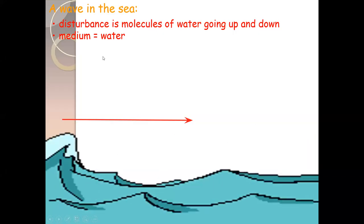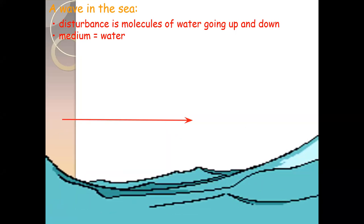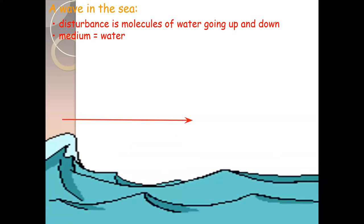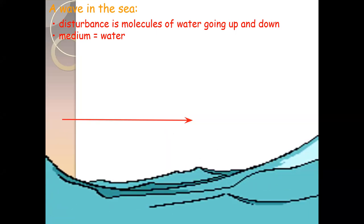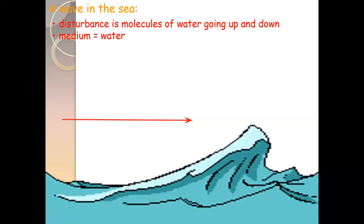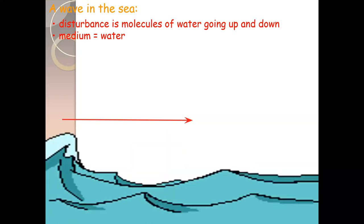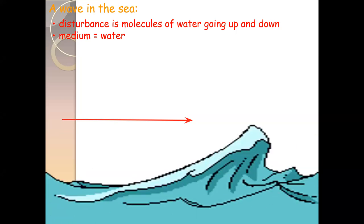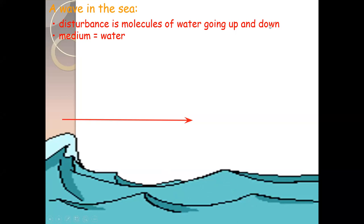So a wave is the way by which energy transfers from one place to another. As you can see in this image, these are water waves or waves in the sea. Work is done on the particle, and energy transfers from one place to another in the form of a wave.